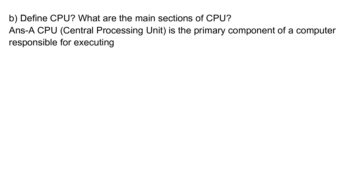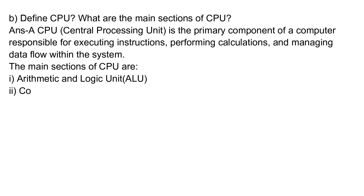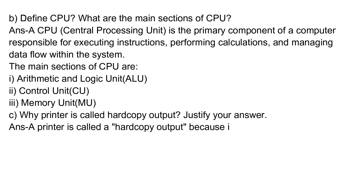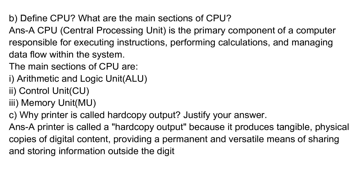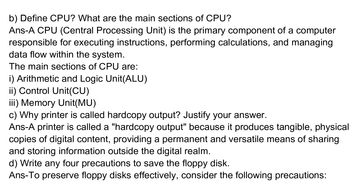B. Define CPU. What are the main sections of CPU? Answer: A CPU (Central Processing Unit) is the primary component of a computer responsible for executing instructions, performing calculations, and managing data flow within the system. The main sections of the CPU are: 1. Arithmetic and Logic Unit (ALU). 2. Control Unit (CU). 3. Memory Unit (MU).